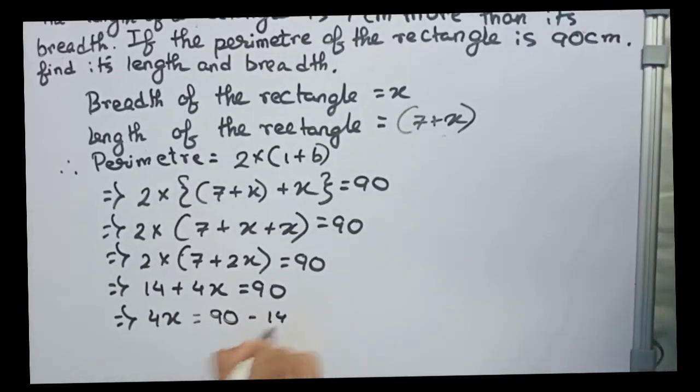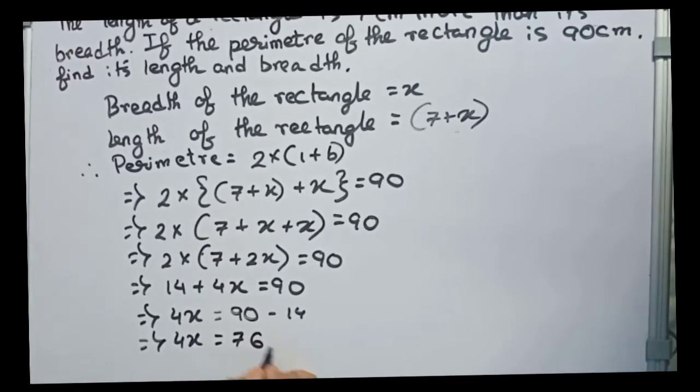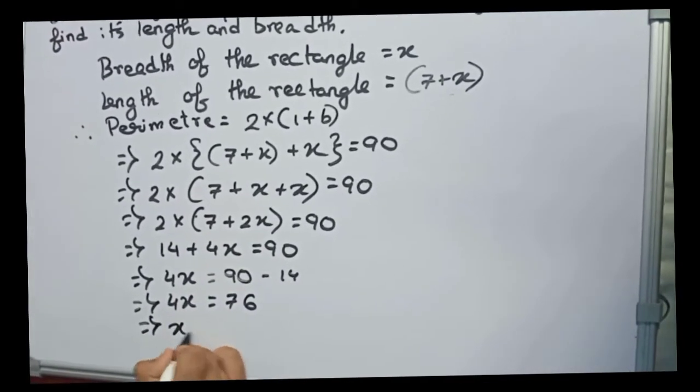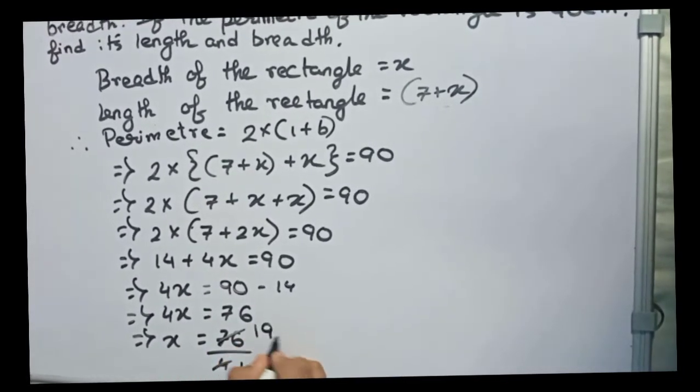90 minus 14, 4x equals 76, or x equals 76 by 4. You can cut it directly, it will become 19.